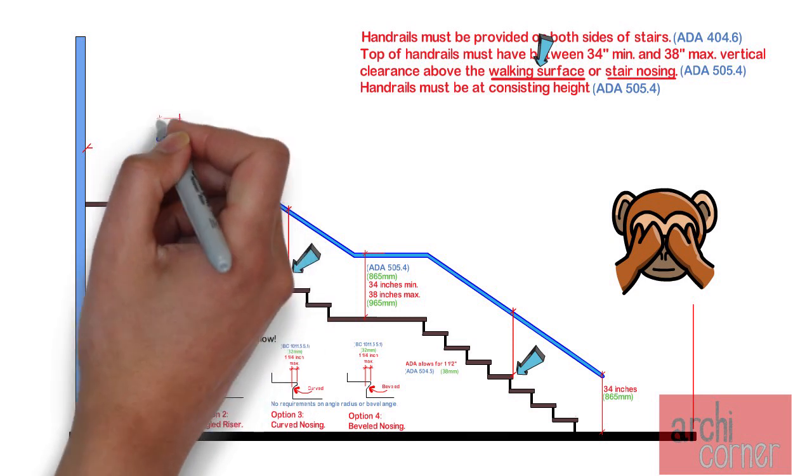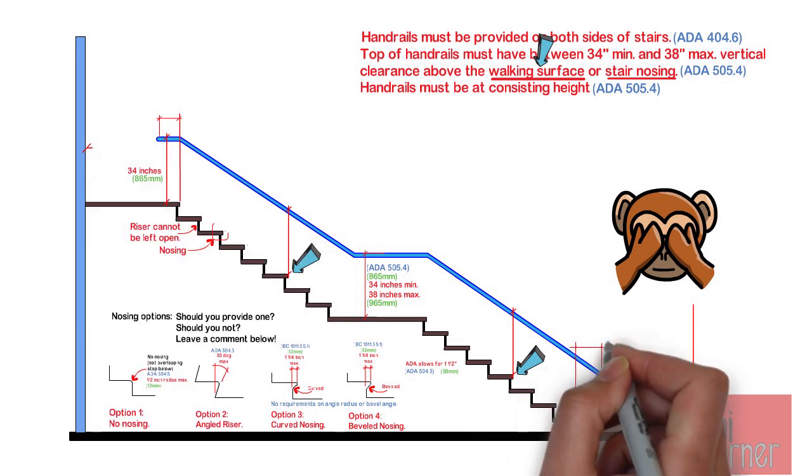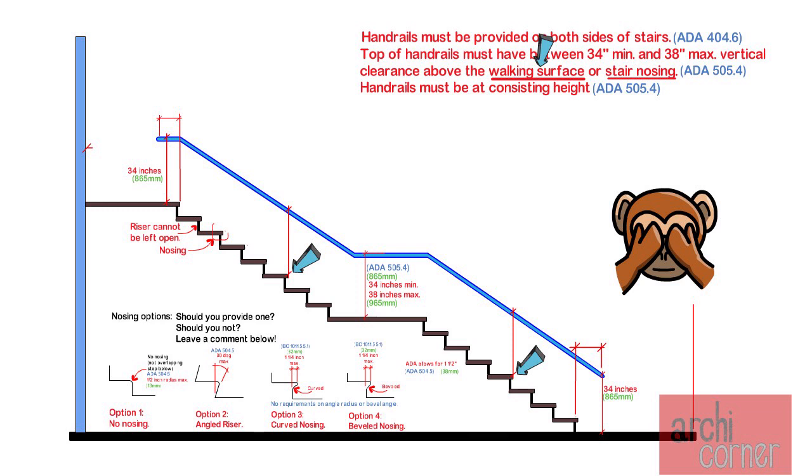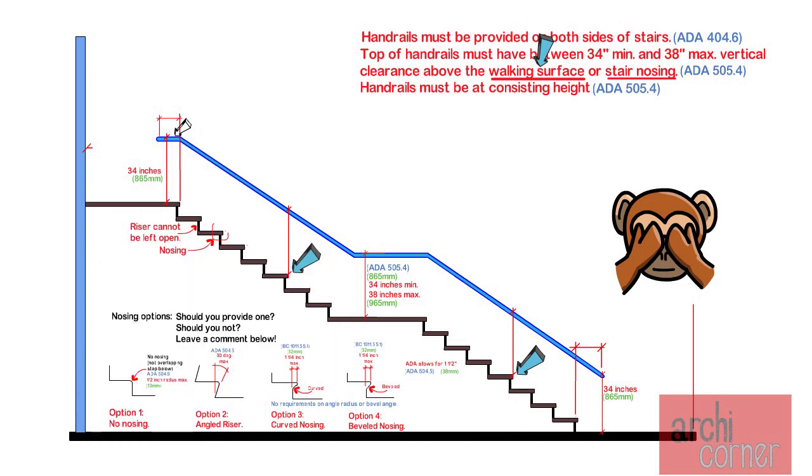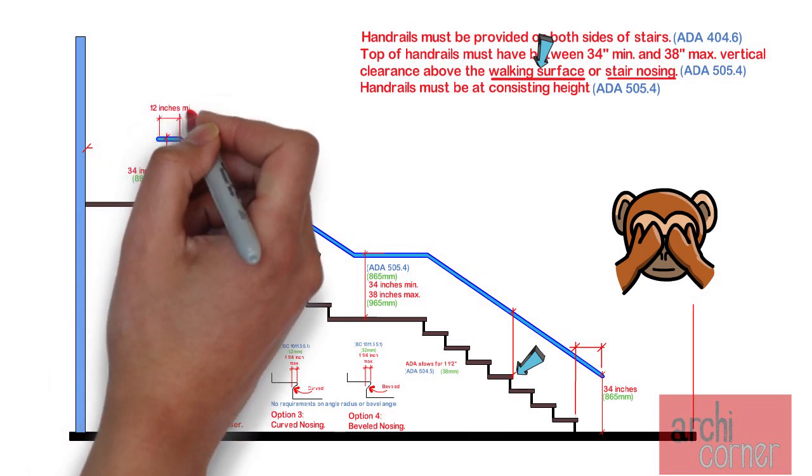The handrail must extend at the top of the stairs and bottom of the stairs. Let's start with the top. As we mentioned earlier, the heights of a handrail are measured to the nosing. Therefore, if we must keep a consistent handrail height and if the handrail must extend at the top of the stair, that horizontal extension must begin at the nosing of the highest step and continue along the walking surface, which is in reference to this code section we were talking about. The handrail must extend horizontally at the landing for 12 inches minimum.